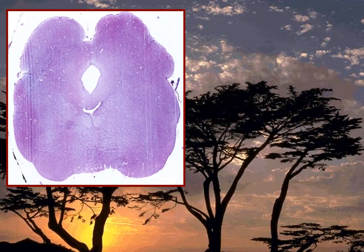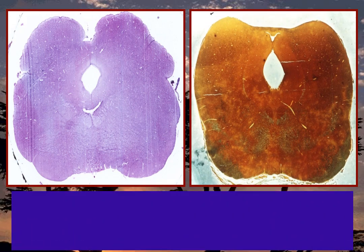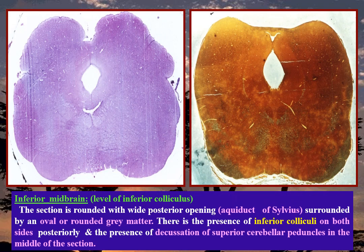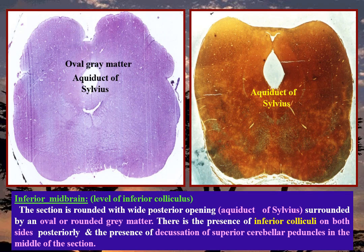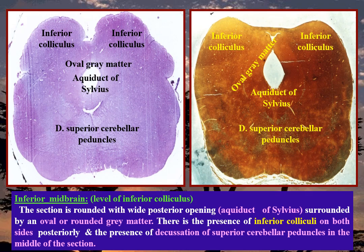Midbrain is the upper part of the brain stem and is divided into two levels. The inferior level, or level of the inferior colliculus — the aqueduct of Sylvius is surrounded by an oval or rounded gray matter. There is presence of inferior colliculi on both sides posteriorly, and decussation of the superior cerebellar peduncle in the middle of the section.